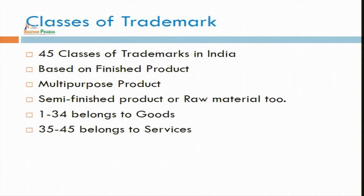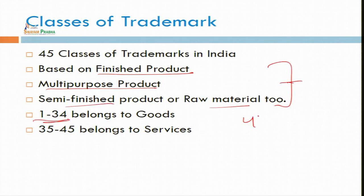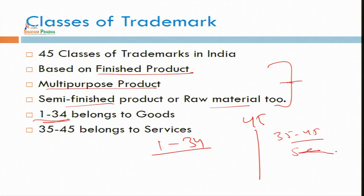There are classes of trademark — one register is maintained by the trademark registry. There is a register which has 45 different classes, based on finished product, multipurpose product, raw material, or semi-finished product. Classes 1 to 34 belong to goods or products, and from 35 to 45 belong to services — for example, banking services, chit fund services, transport services, aviation services. Air India, Singapore Airlines — all these come under services. Goods and services have different registers and different classes under the Trademark Act.